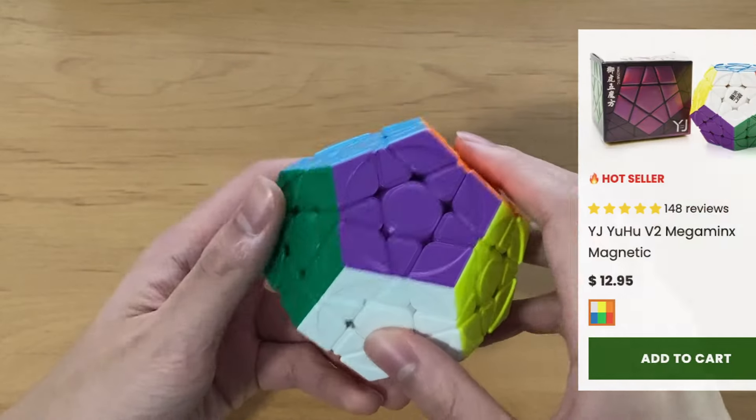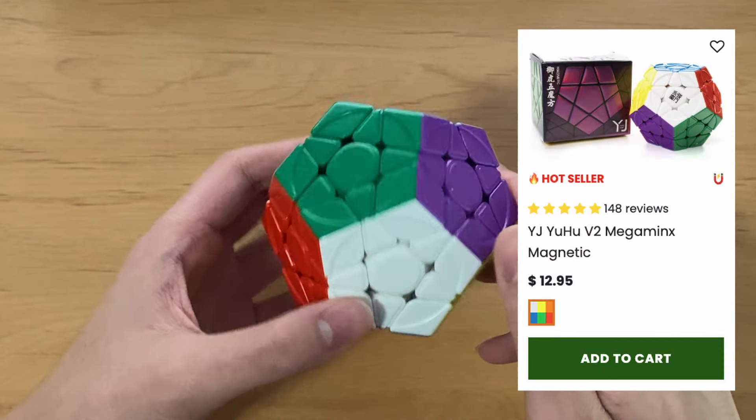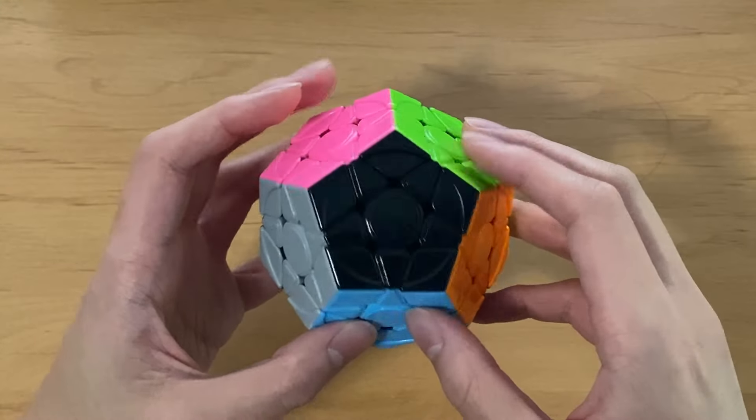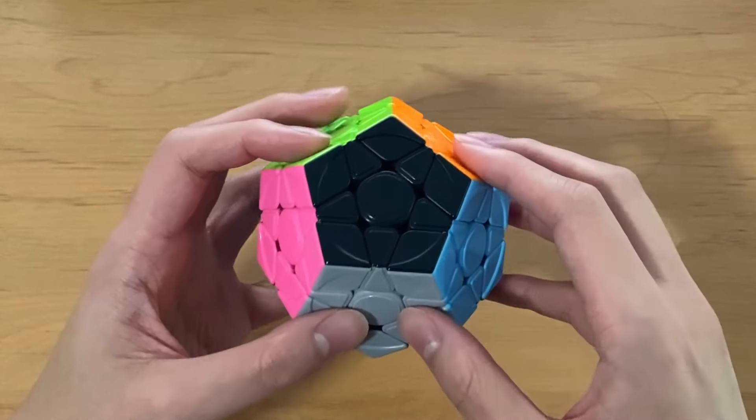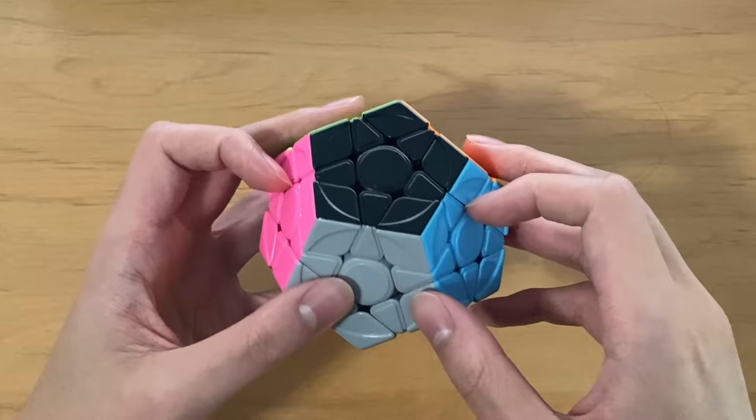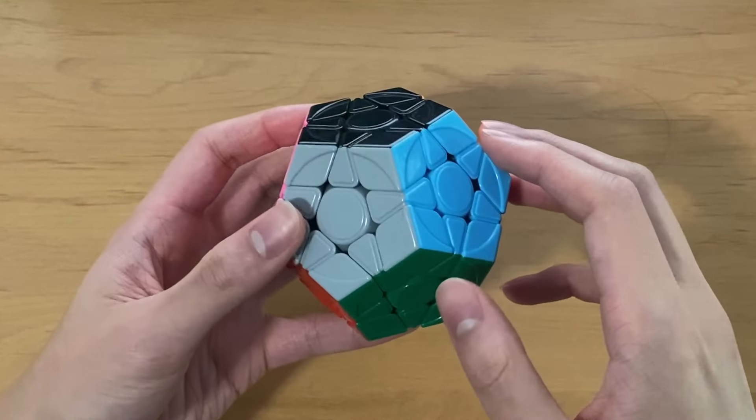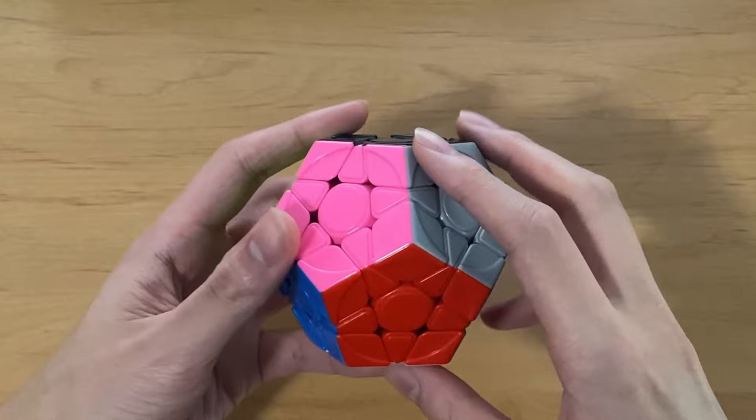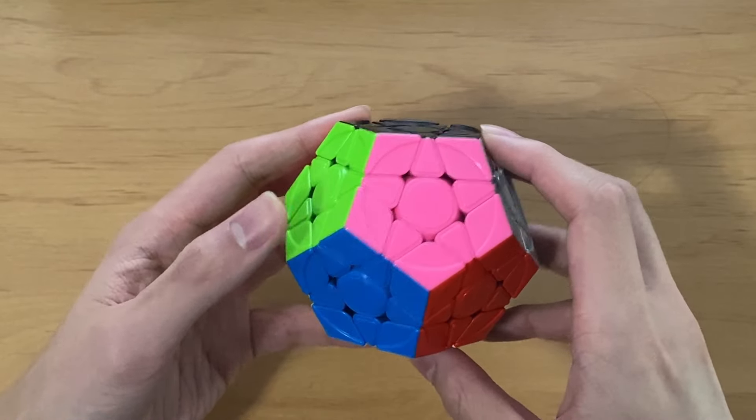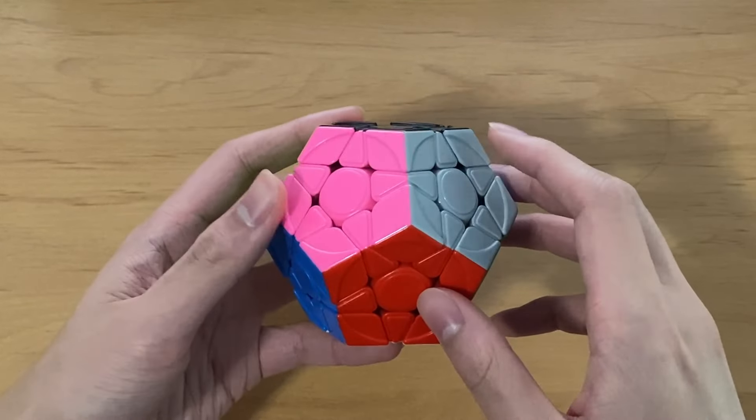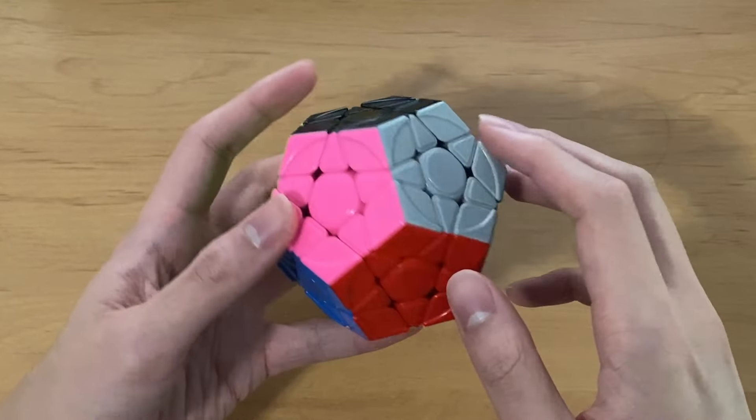For Megaminx, I use the YJ Yoohoo V2M. I've mained this cube for like 3 years and it's been very consistent for me. I've been able to get very nice PRs on this cube, of a 34 single and a 38 average, which are both very good for me. The size is pretty big, so if you have smaller hands I would probably recommend getting the Dayan Pro instead, but for me this works super well.